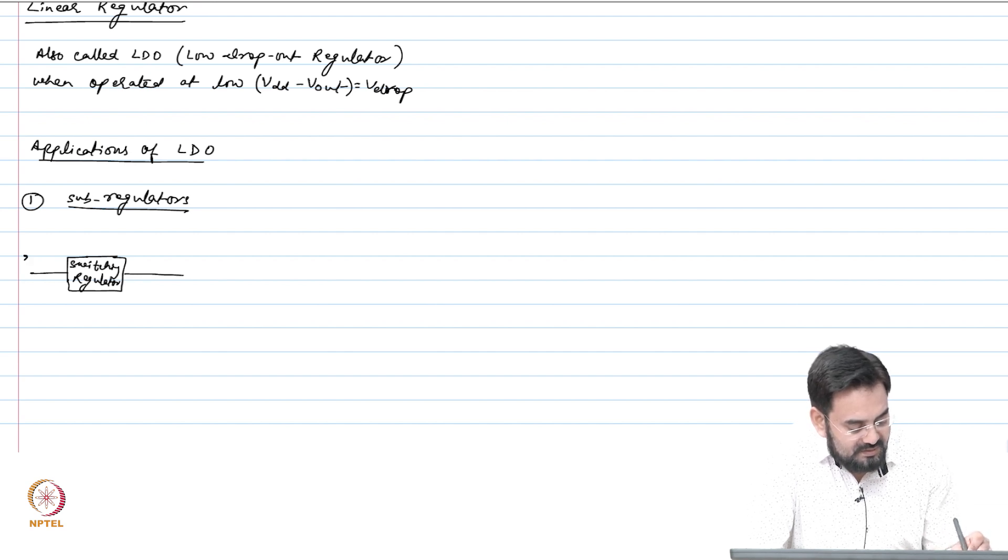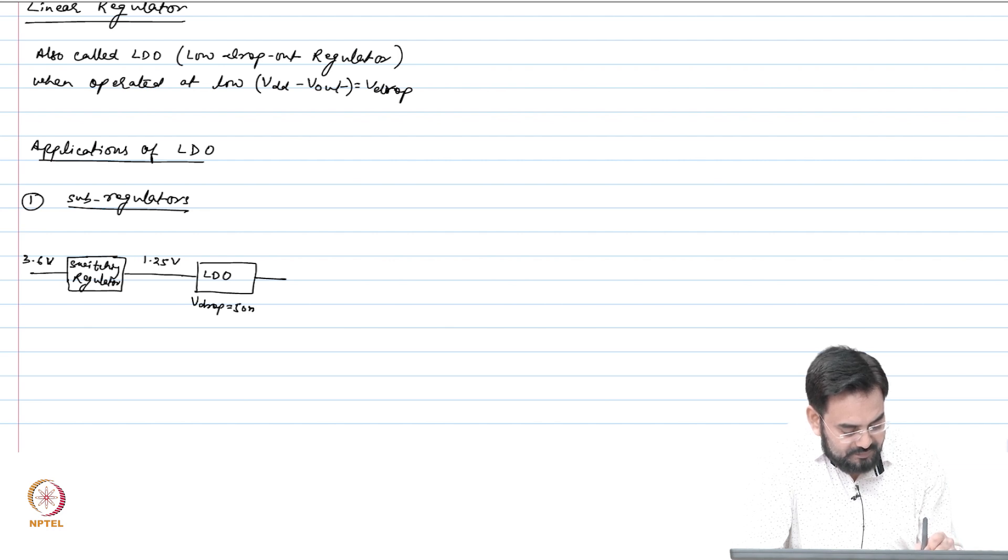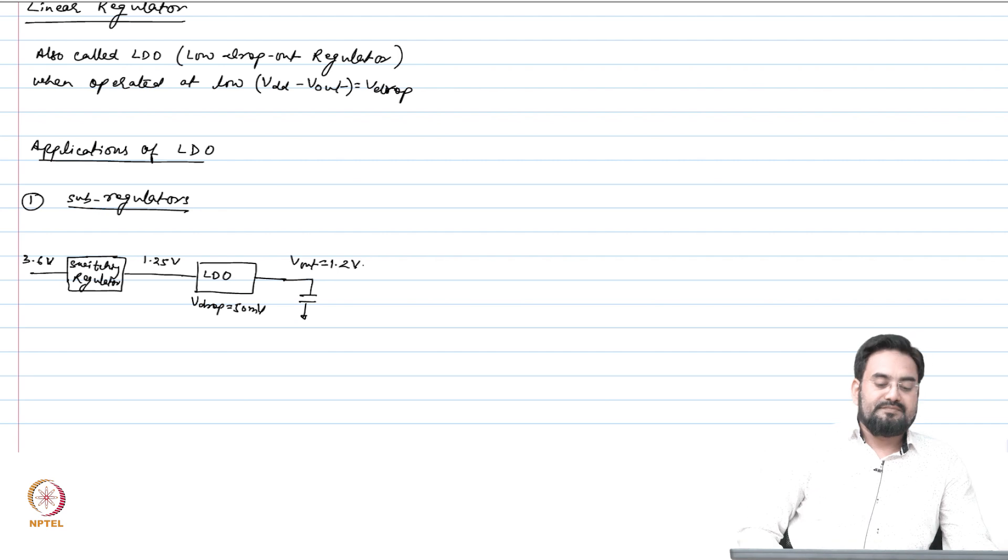Put this LDO with 50 millivolt Vdrop and this is your Vout. This is called sub-regulator.